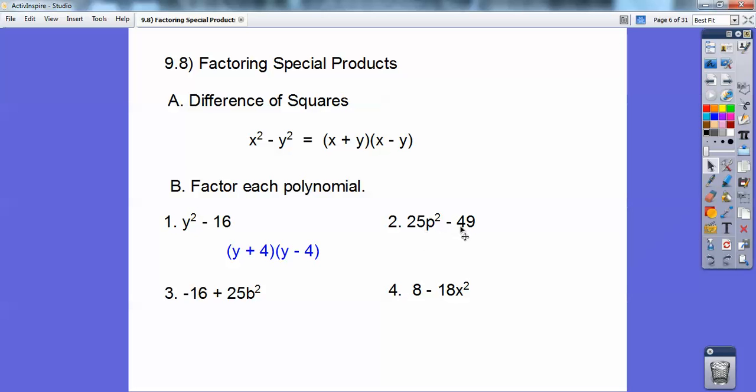The square root of that's 5p, the square root of that's 7, and it's a minus sign in between them, so it's going to be 5p plus 7, 5p minus 7. On this one here, that's a plus sign, so I'm going to rearrange these so this comes first and this comes second. That way I can have a difference of squares. So then now it's 5b plus 4, 5b minus 4.